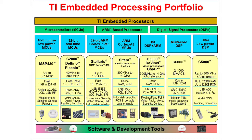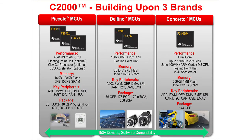The C2000 family, which this workshop is based on, includes the Piccolo, Delfino, and Concerto product lines. The Piccolo product line ranges in performance from 40MHz to 80MHz and has options for a floating point unit, control law accelerator coprocessor, a Viterbi ComplexMath CRC unit, and USB. The Delfino product line ranges in performance from 100MHz to 300MHz and features a floating point unit and some devices with an external memory interface. The Concerto product line consists of a dual subsystem architecture incorporating a C28X CPU up to 150MHz and an ARM Cortex-M3 CPU up to 100MHz, with a Viterbi ComplexMath CRC unit. The three product lines provide you with over 150 devices to choose from and maintain software compatibility.